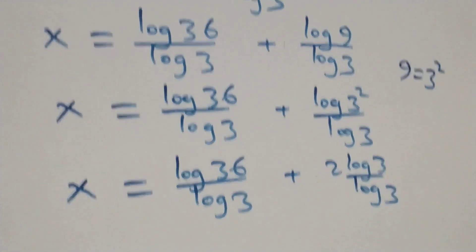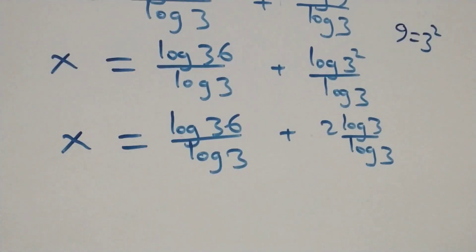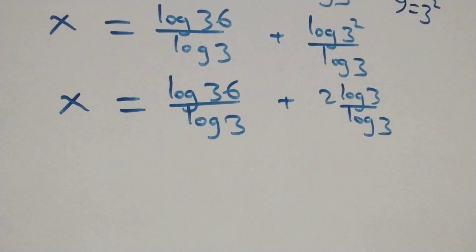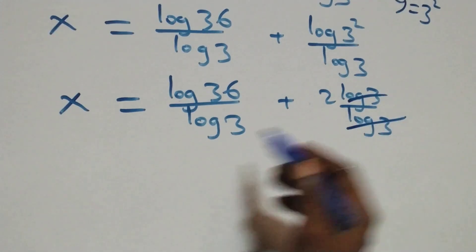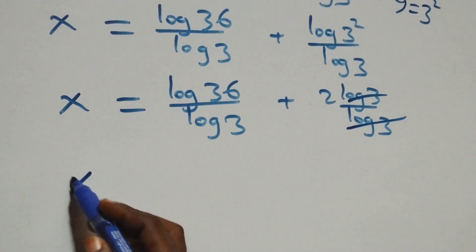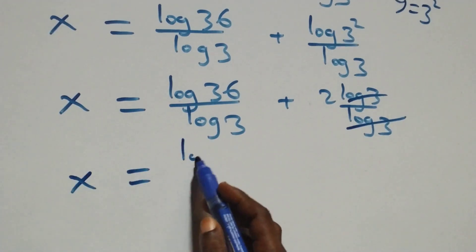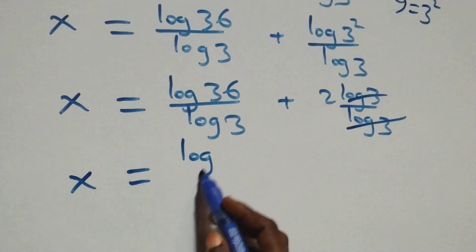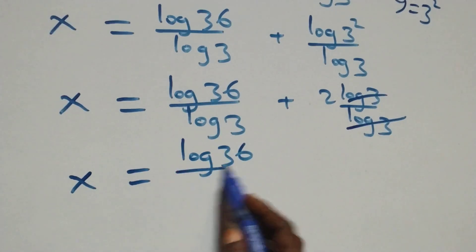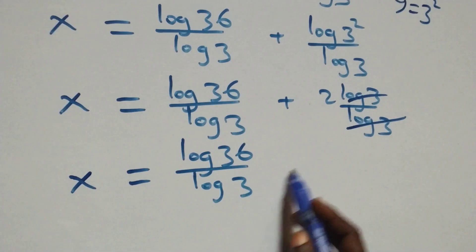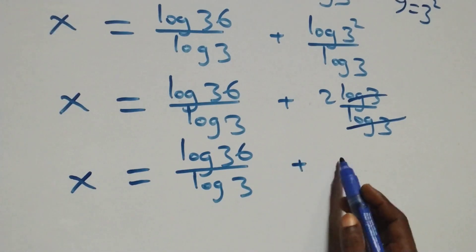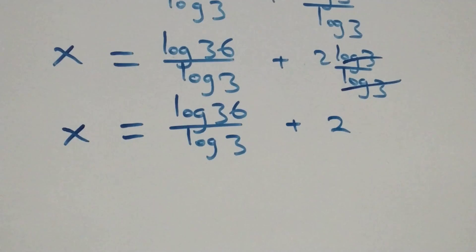Applying the power rule, 2 comes out in front, giving us 2 times log 3 over log 3. The log 3 terms cancel each other, and 2 is left. So x equals log 36 over log 3 plus 2.